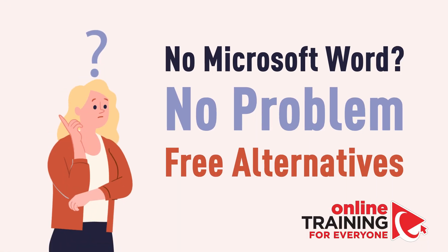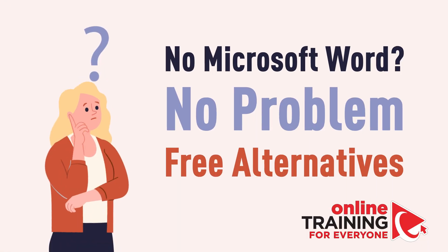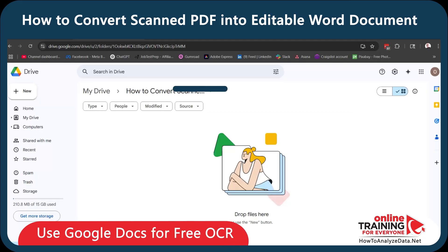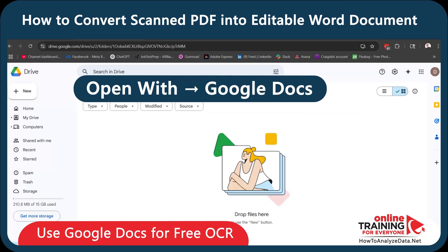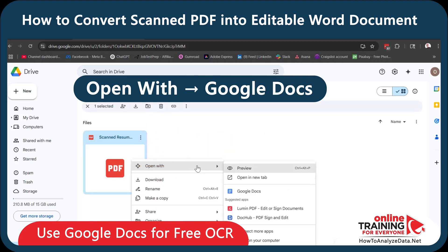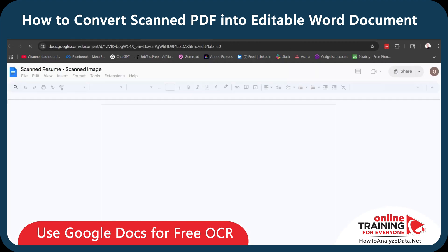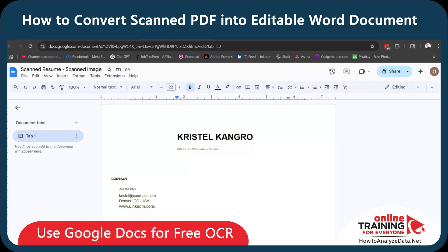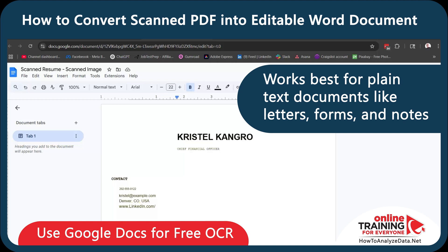If you don't have a Word license, there are still great options available but they come with a few trade-offs. You can upload a scanned PDF to Google Drive, then right-click on the file and select Open with Google Docs. Google will run its own OCR engine and convert the scanned content into a Google Docs file. Google's OCR engine works best for plain text documents like letters, forms, and notes.